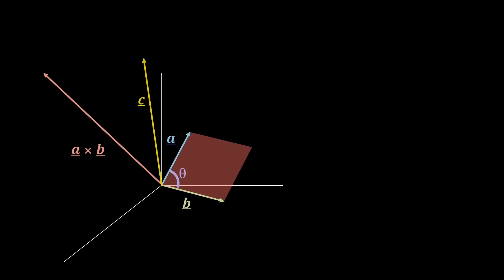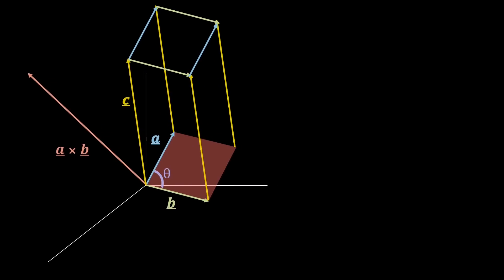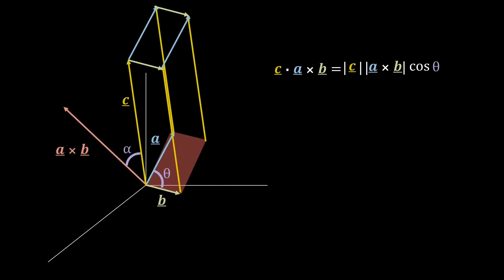We now move on to the final definition of this video. So, imagine we add a vector c, and form a 3D shape, as shown here. Then, say we want to define the volume of this, then this is the dot product between c and a cross b.